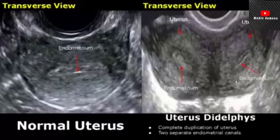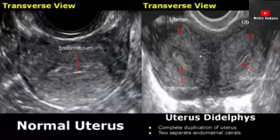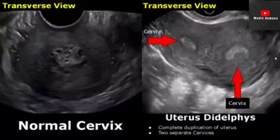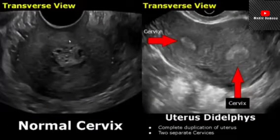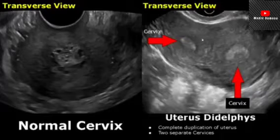Here we have transvaginal images in the transverse plane. This is the normal uterus and this is uterus didelphys — we can see two separate uteri and two separate endometrial canals. In the cervix images taken transvaginally, there are two separate cervices as well, because there is complete duplication of the uterus.